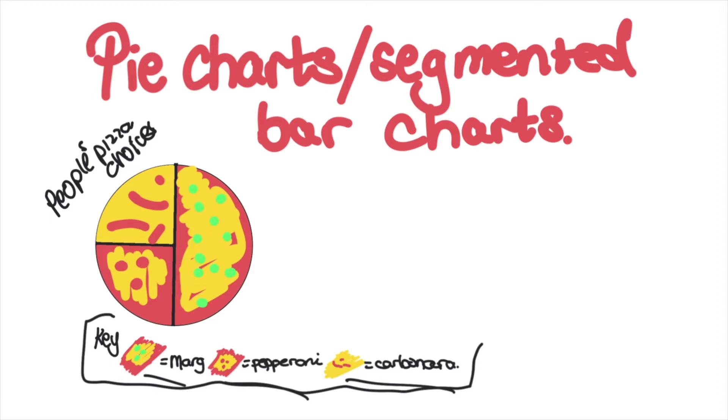Based on the pie chart, we can actually see what proportion of people surveyed picked different options. For example, if we had to say what proportion of people picked margarita, it is half because half of the graph is shaded. What proportion picked pepperoni? A quarter. And same for carbonara.